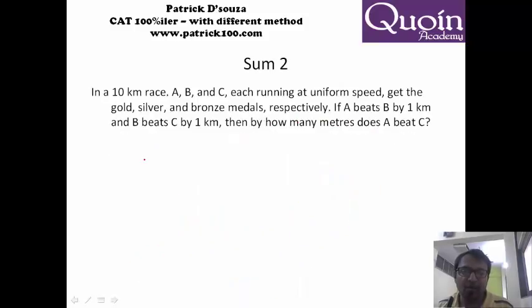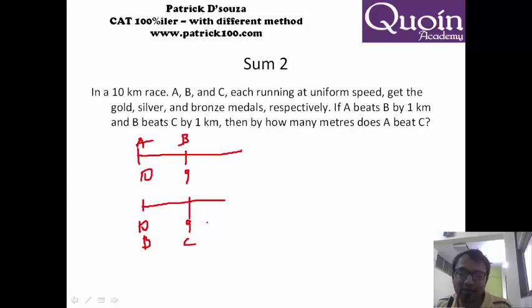Let's look at the next sum. Time and distance, not very difficult. A, B and C each running at uniform speeds get gold silver bronze medals. A beats B by 1 kilometer. Basically it means that when A runs 10 kilometers, B has run 9 kilometers. Similarly B beats C by 1 kilometer. When B runs 10 kilometers, C runs 9 kilometers. That means the ratio of the distance covered by B and C is 10 is to 9.